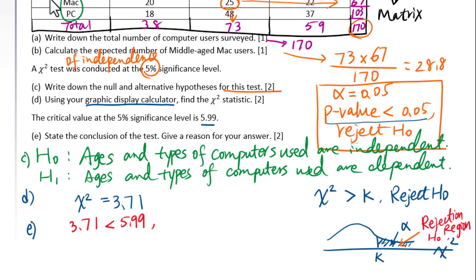Since 3.71 less than 5.99, we don't have enough evidence to reject H0, which means ages and types of computers used are independent.